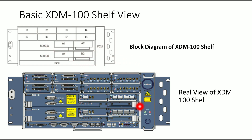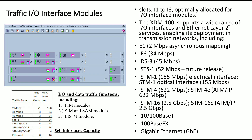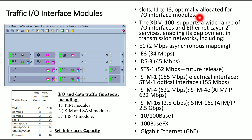These are the real-view and self-view of the XTM-100 shelf, and these are the views which can be shown in the NMS. Traffic input-output interface slots 1 to 8 are optimally allotted for the input-output interface module.